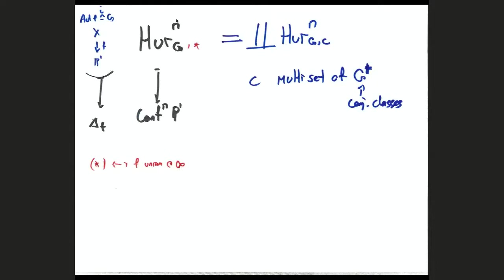Even when you fix n and this marked point, Hurwitz spaces still break up into lots of components. The easiest first invariant: take a multi-set of conjugacy classes of G of size n. Above each branch point, you get inertia — either as what you're used to in the number field case or, in topology, as what happens to a loop over a ramified point. The inertia above each point gives you an element of the Galois group, though you still can't order the ramification points since it's configuration space. These inertia multi-sets give components of Hurwitz.